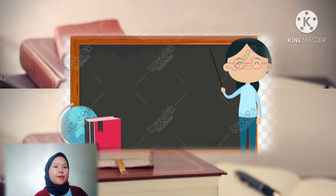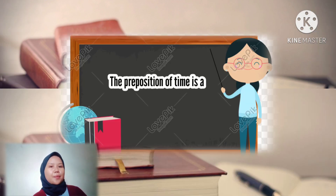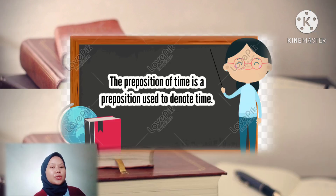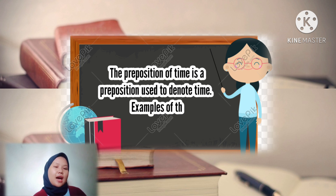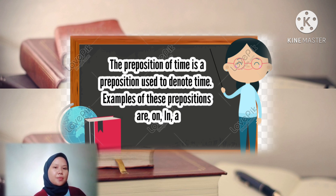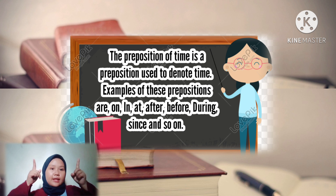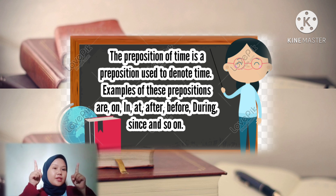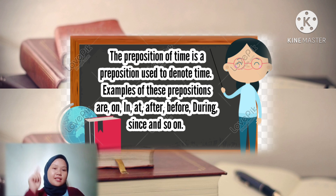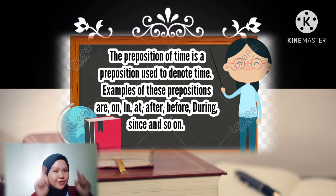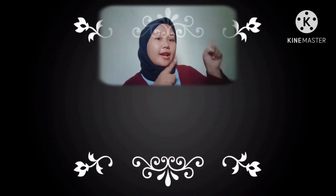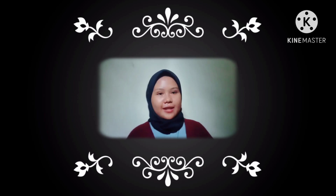The preposition of time is the preposition used to indicate time. Examples of this preposition are: on, in, at, after, before, during, since, and so on. Let's go to the example sentences.